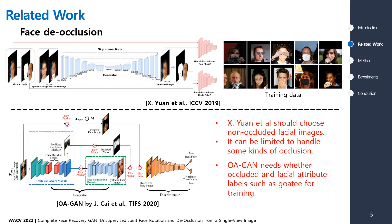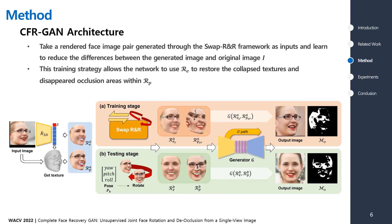Most face de-occlusion methods aim to reconstruct original images from synthesized images occluded with a limited set of objects. OAGAN can leverage natural facial images but needs some labels like facial attributes and whether occluded. To address these limitations, we propose Complete Face Recovery GAN, called CFR-GAN, which is a fully unsupervised method.